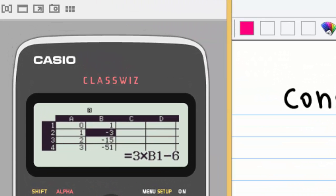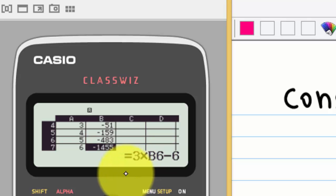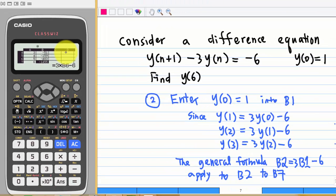The spreadsheet will tell you that when n=6, the value of y equals -1455. This is how you use the spreadsheet in Casio ClassWiz.